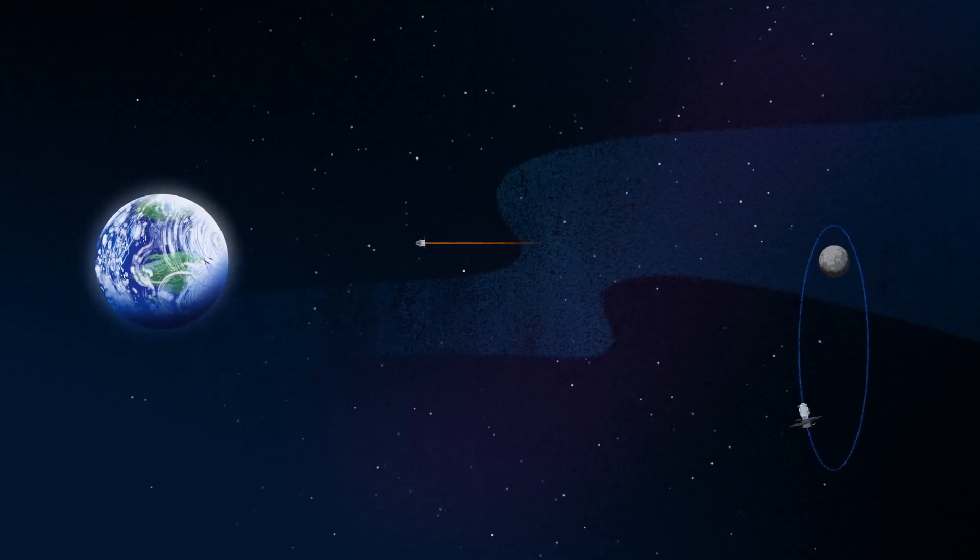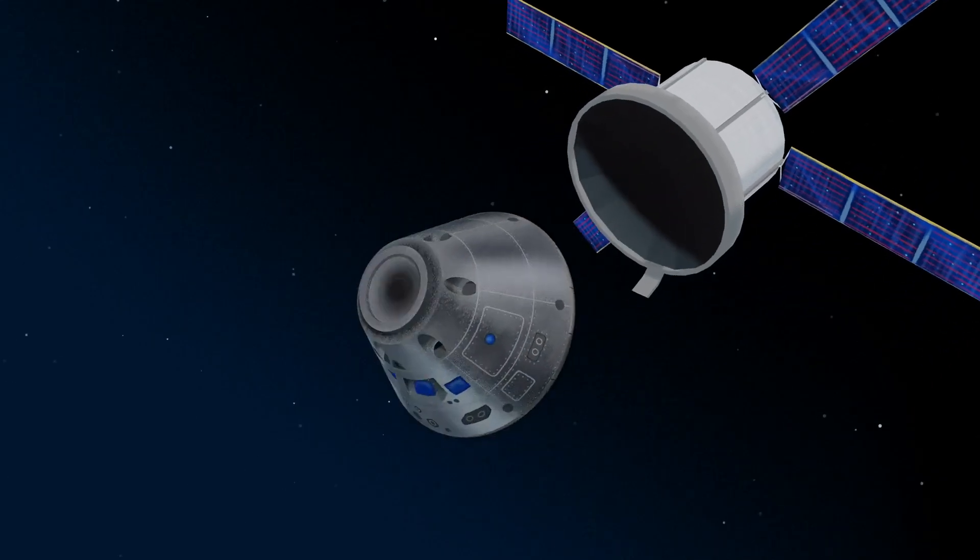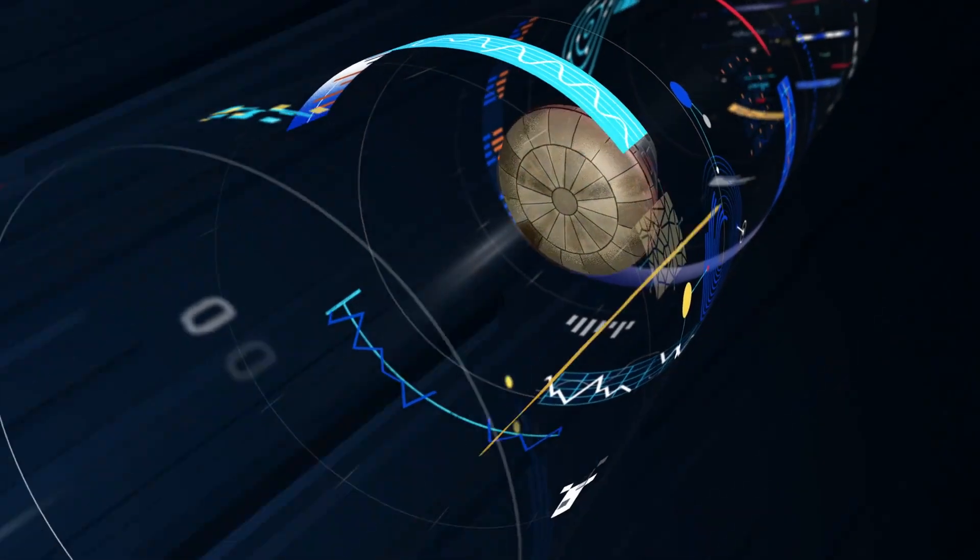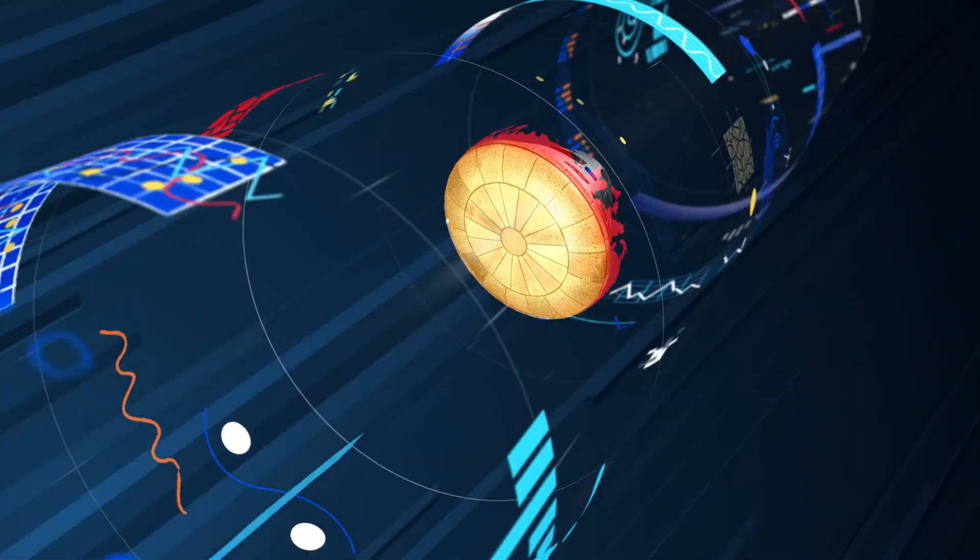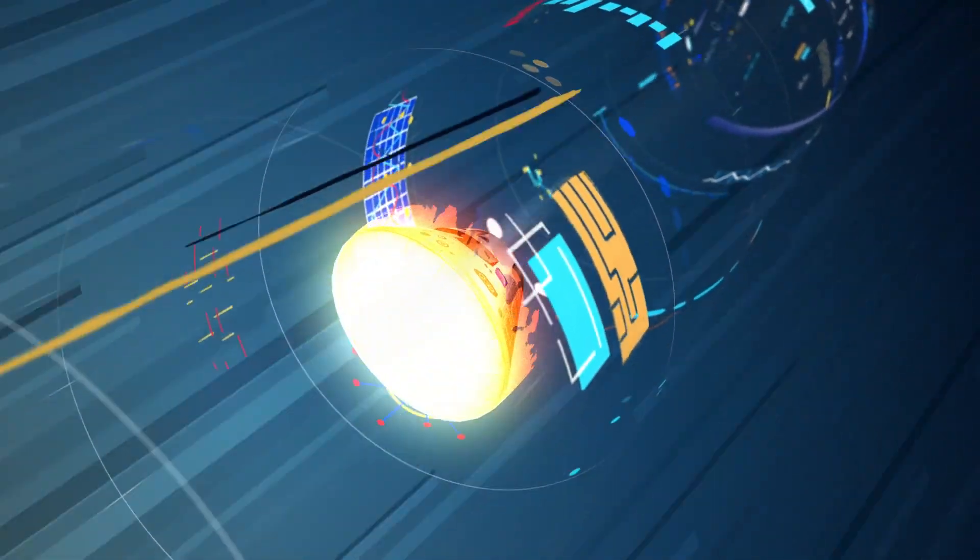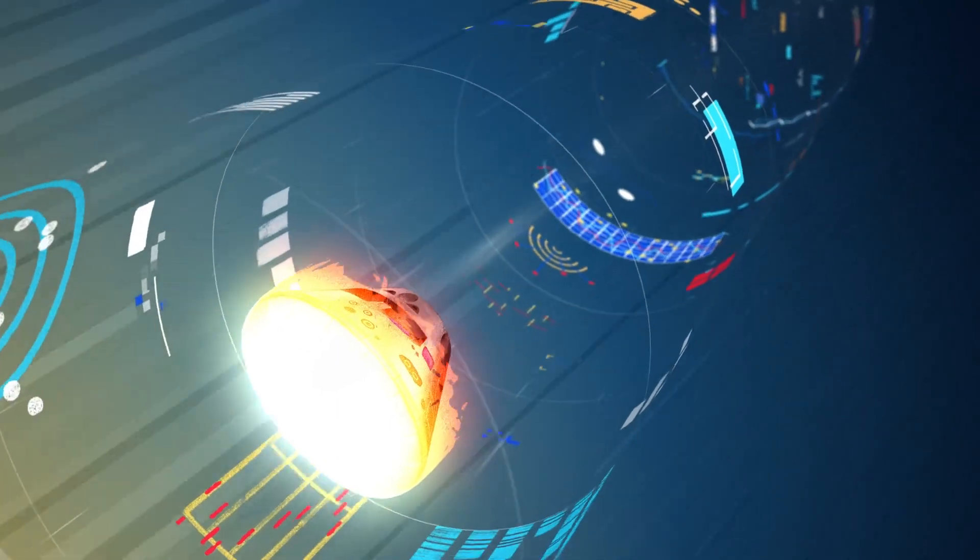As they near the end of this journey, the service module is released, and the crew module is oriented heat shield first. Entering Earth's atmosphere at 25,000 miles per hour, the friction of air slows Orion considerably, while also subjecting it to temperatures of 5,000 degrees.